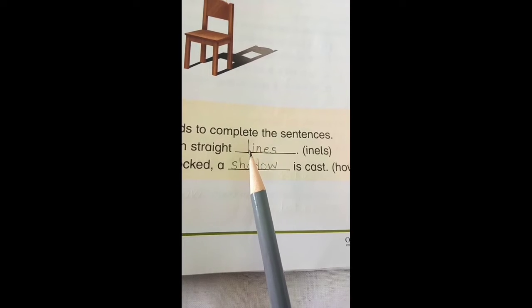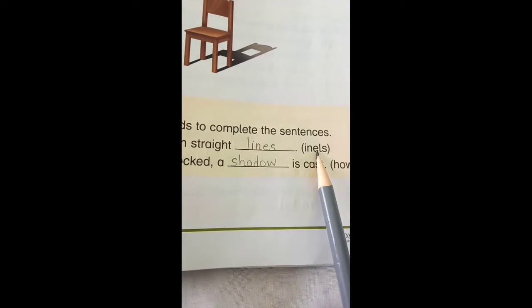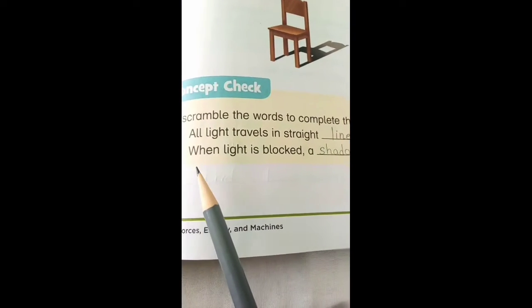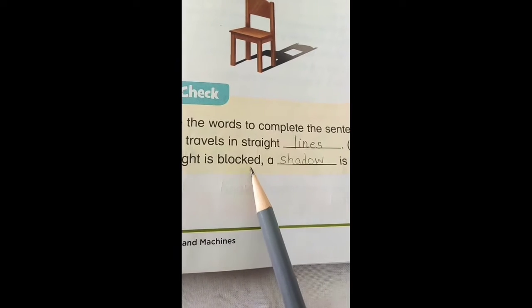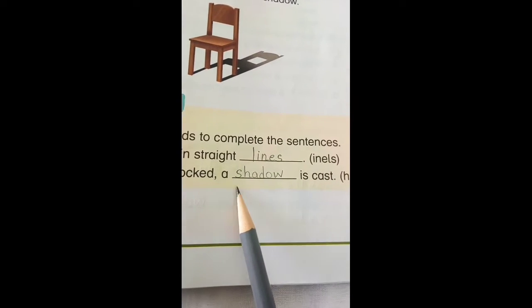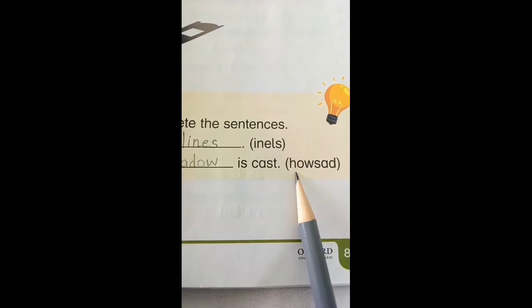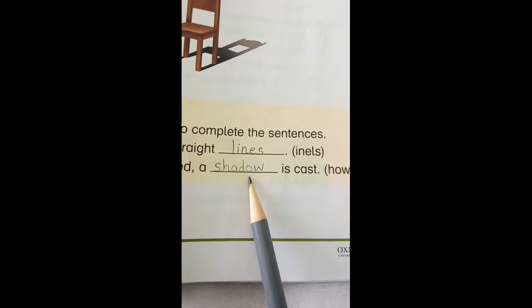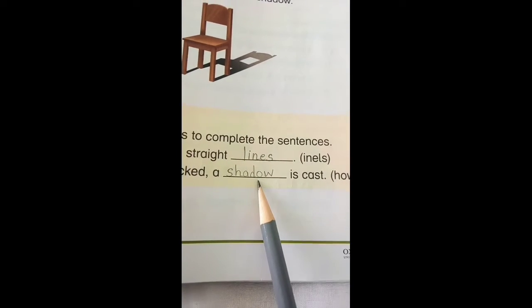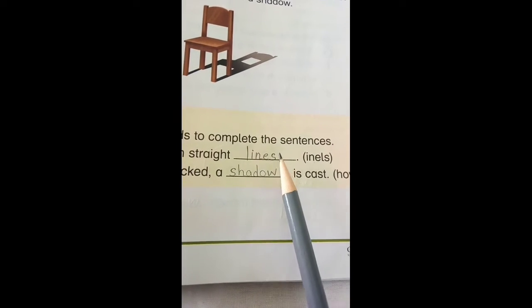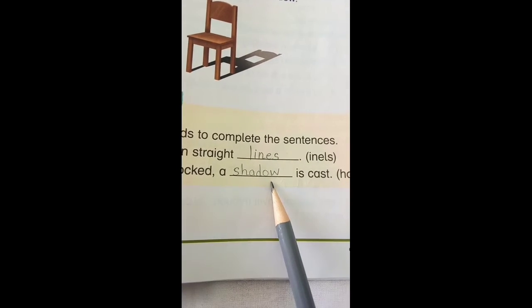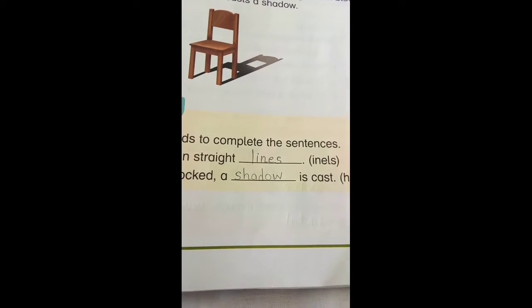Now fill in the blanks. Number one: light travels in straight lines — yeh kya hai, yeh lines hai. Number two: when light is blocked, a shadow is cast — jab light block hoti hai toh shadow banta hai. So you have to write 'lines' and 'shadow' in these two blanks, very neatly.